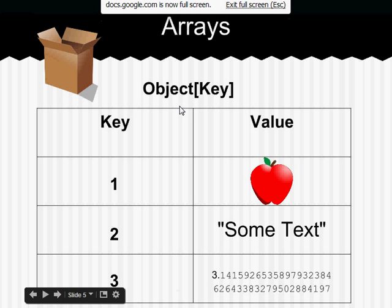They can be referred to by using the square brackets on object. So, if we had object, opening square bracket, and the number 2, and the closing square bracket, the result would be some text.